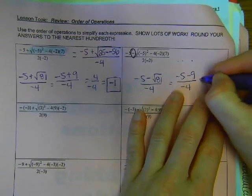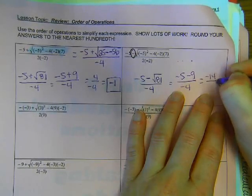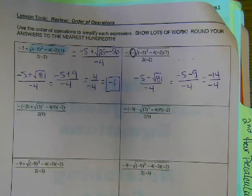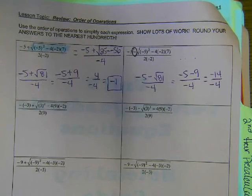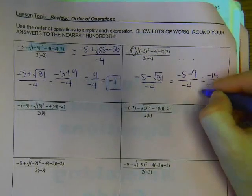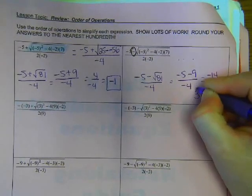Negative 14. Can somebody tell me what negative 14 divided by negative 4 is? 3.5.